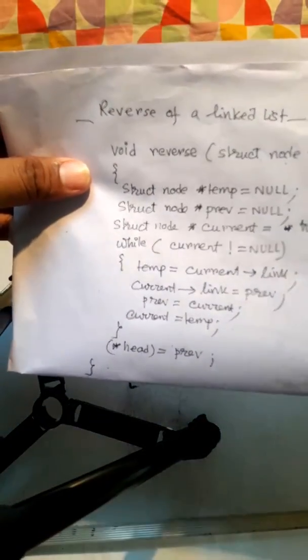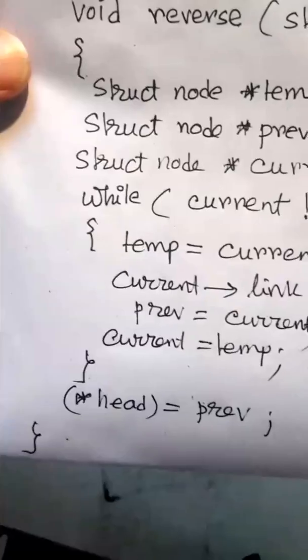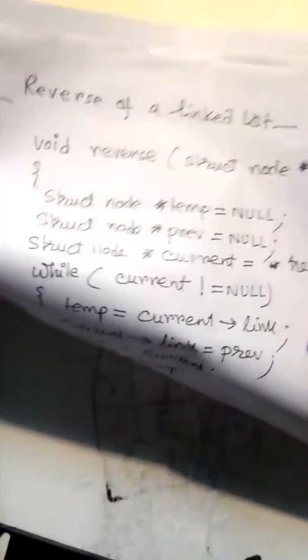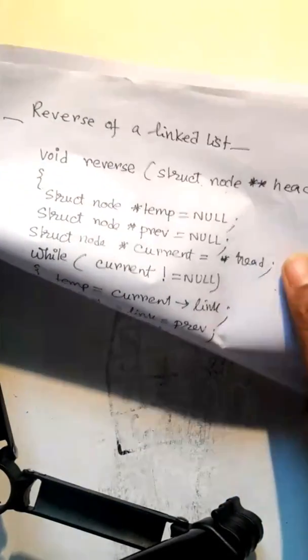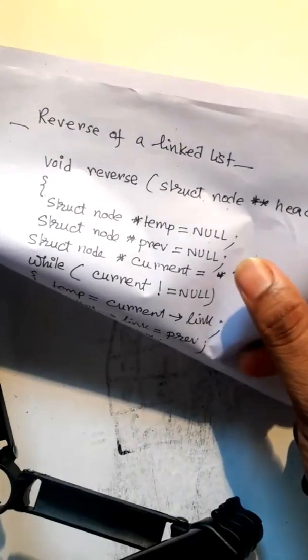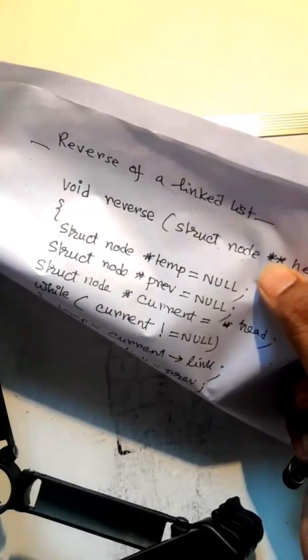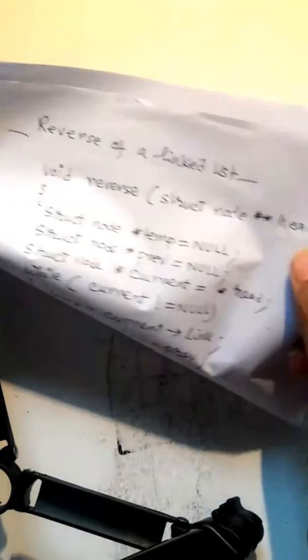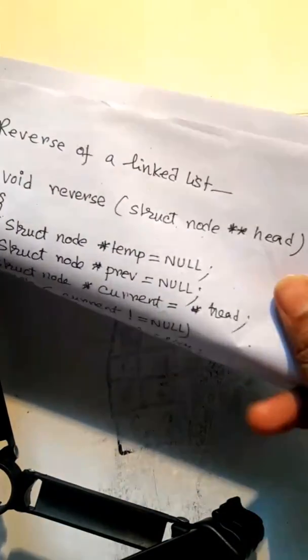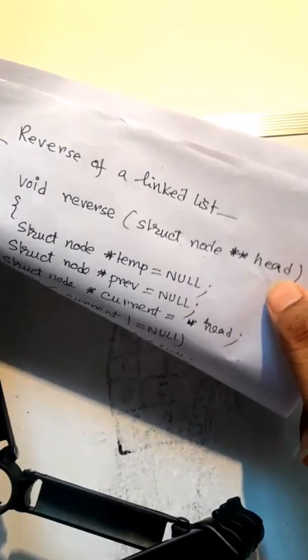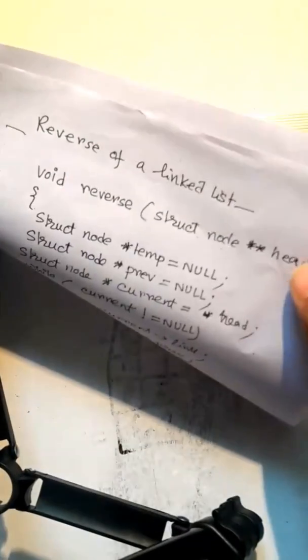This is the function for reverse of a single linked list: void reverse, struct node double pointer head. This means head is a pointer to a pointer — a node type double pointer. The void reverse function takes struct node pointer head, which is the starting node of the linked list.